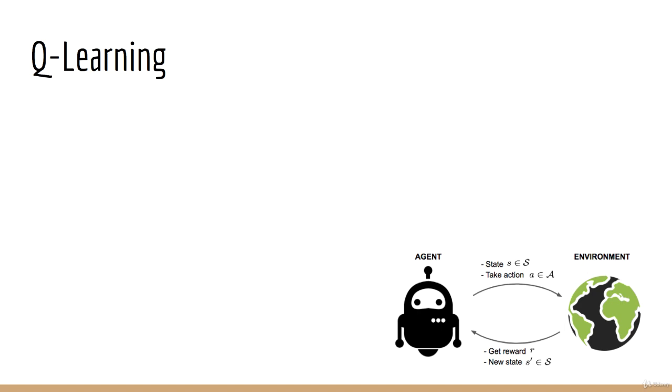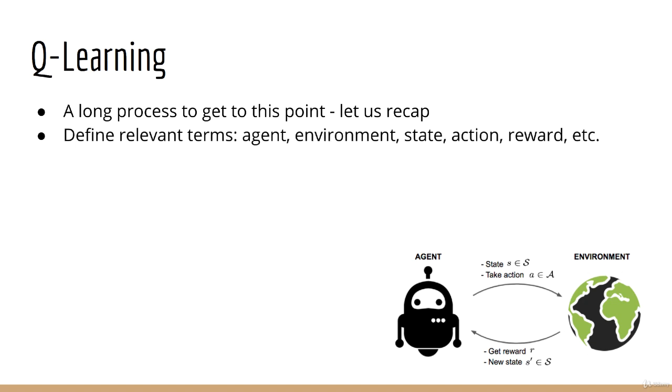At last, we are ready to study the famous Q-learning algorithm. Let's recap what we've done so far, because it's been quite a long process to even get to Q-learning. First, we defined all the relevant terms, such as agent, environment, state, action, reward, and so forth.